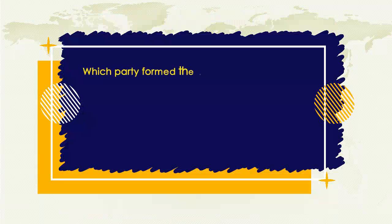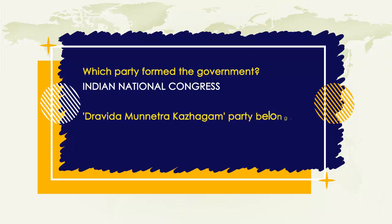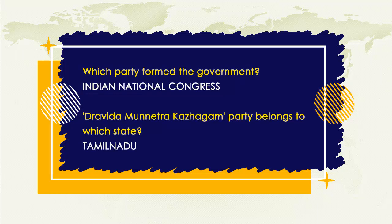Which party formed the government? The Indian National Congress. The Dravida Munnetra Kazhagam party belongs to which state? Answer: Tamil Nadu.